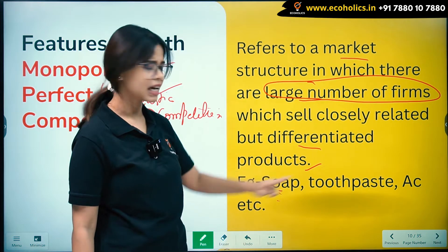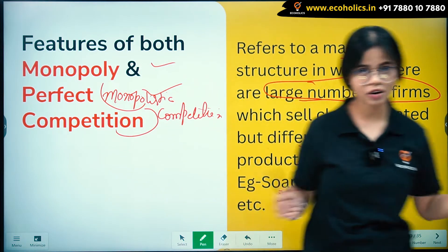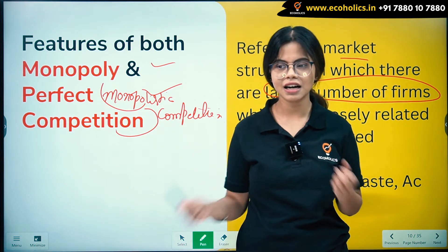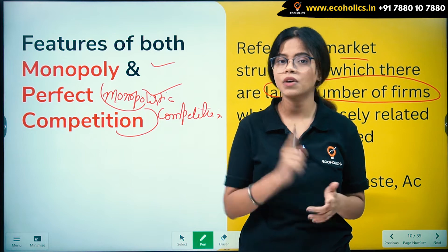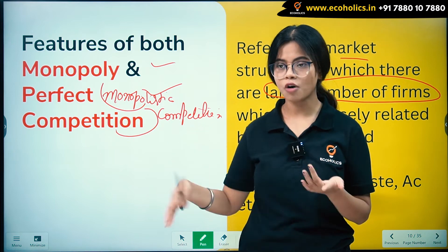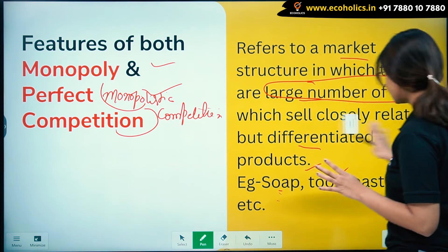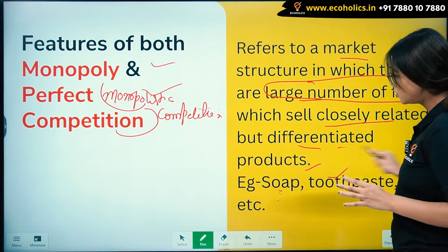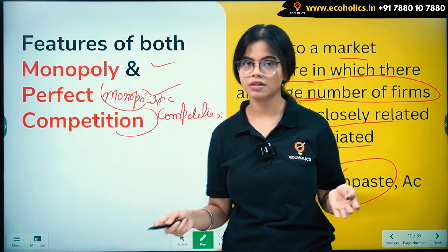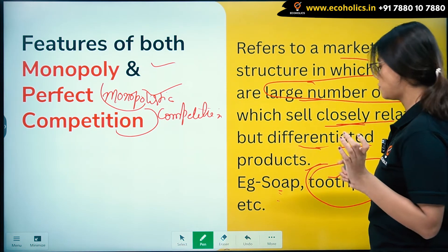For toothpaste, there are different brands like Colgate, Pepsodent, Babool — all of which have a unique feature. That is the meaning of closely related but differentiated products.